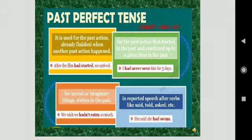Now next is for the past action that started in the past and continued up to a given time in the past. Given time means period of time is given, then we use past perfect tense over there. I had never seen him for five days.